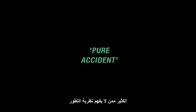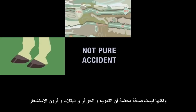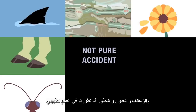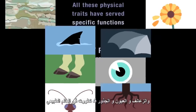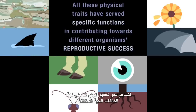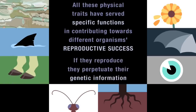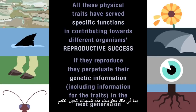Many who don't understand evolution try to discredit it by equating it with pure accident. But it's not pure accident that camouflage, hooves, petals, antennae, fins, wings, eyes and roots have evolved in the natural world. All these physical traits have served specific functions in contributing towards different organisms' reproductive success. And clearly if the organisms that exhibit these traits manage to reproduce, they perpetuate their genetic information, including the information for the traits, in the next generation.